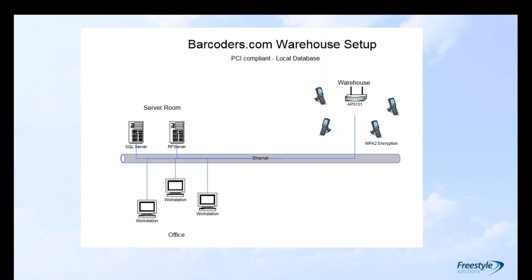Access points are to scanners as cell phone towers are to your cell phone — if your wireless scanner roams beyond the capability of an access point it will not work. There is an upfront one-time cost for the hardware, which is minimal compared to other new equipment. There's also an ongoing monthly software rental that includes support and any upgrades or bug fixes.